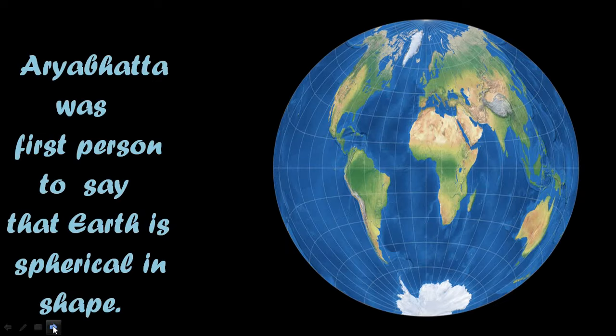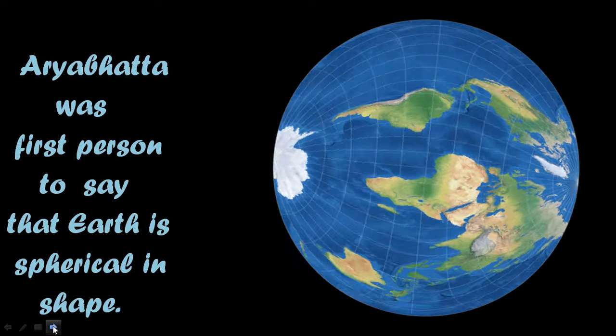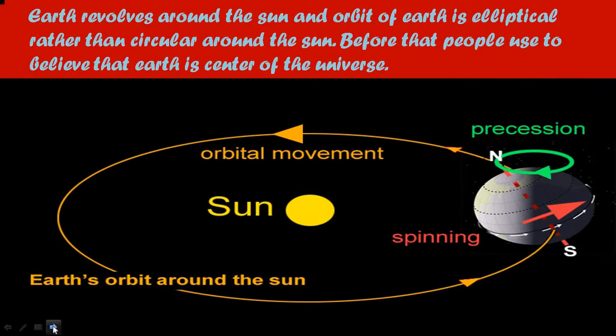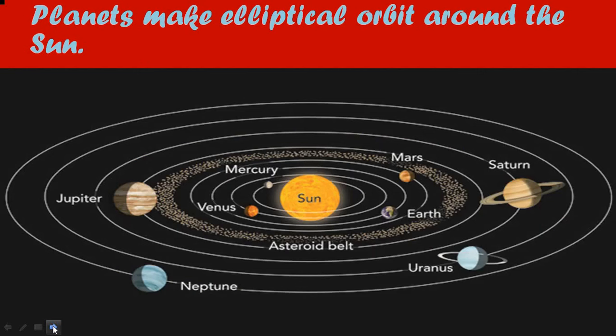Let's talk about his discoveries in astronomy, which completely changed the vision of world scientists about space. Earlier, people believed that the earth is flat in shape. Aryabhata was the first person to say that the earth is spherical in shape. He discovered that the earth revolves around the sun and the orbit of the earth is elliptical rather than circular. Before that, people used to believe that the earth is the center of the universe. He also said that planets make elliptical orbits around the sun.